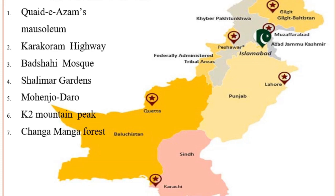For Work Page E you have been given a map of Pakistan to be labeled in the book. Instead of labeling the map with names, we will put the number of that landmark on the map of Pakistan to show its place. Our first option is Quaid-e-Azam's mausoleum — it is located in Karachi, so we will write number one near Karachi.